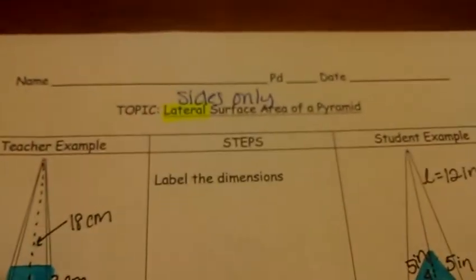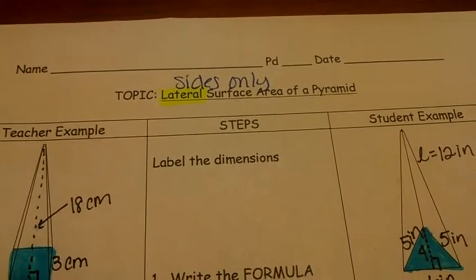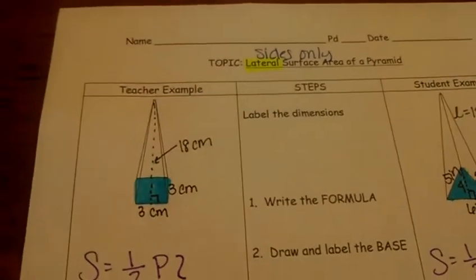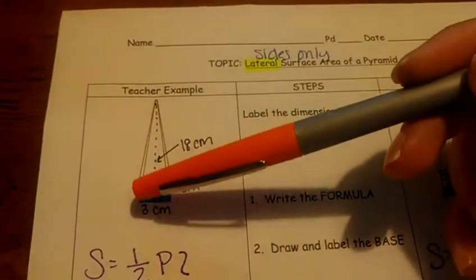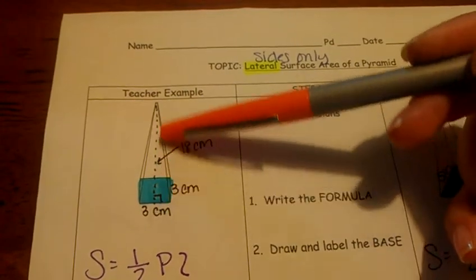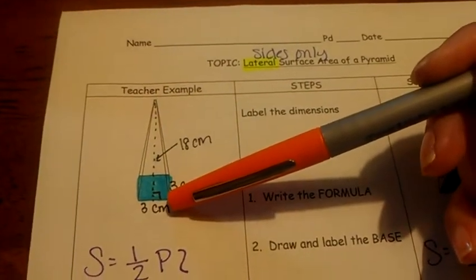So I'm going to come over here. The first thing I'm going to calculate is my lateral surface area, sides only. Here's my pyramid. Now, my sides are what? My sides are always going to be triangles when I'm talking about a pyramid.